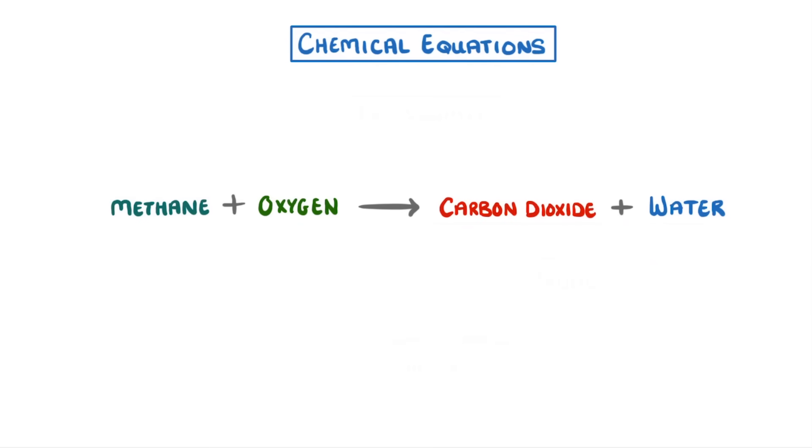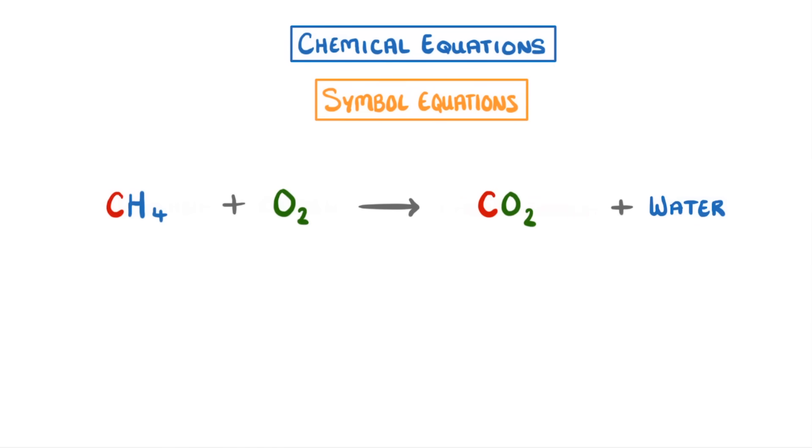More often though, instead of writing these word equations, we write symbol equations, using the chemical symbols of each molecule involved. So we would have CH4, which is methane, plus O2, going to form CO2, plus H2O.